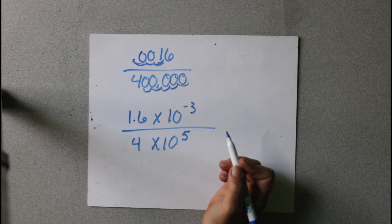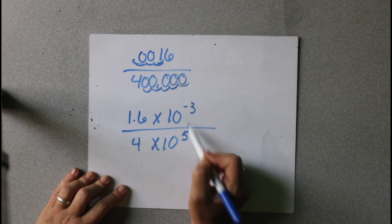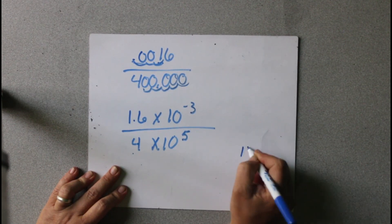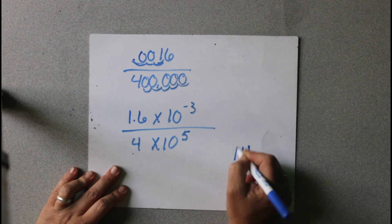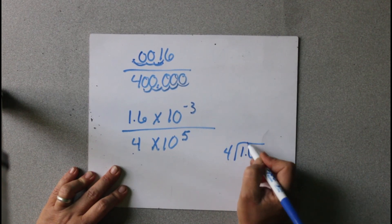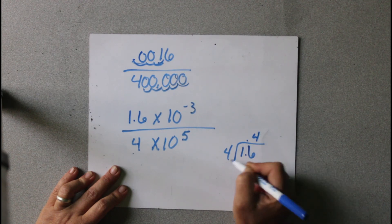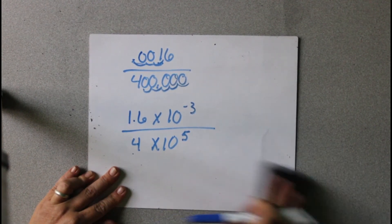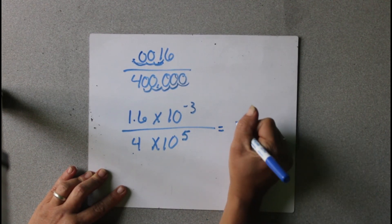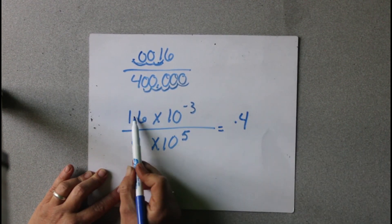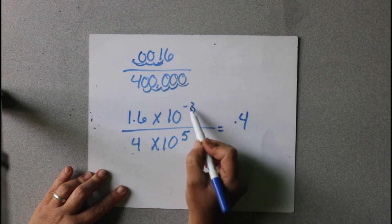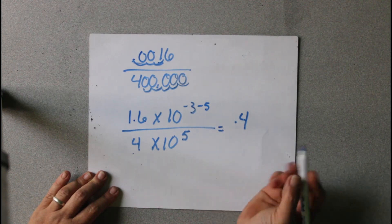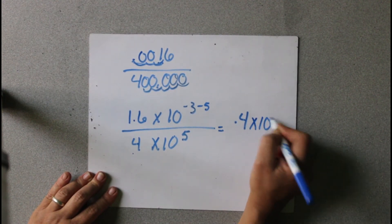Remember, when we divide exponents, we subtract. So first we're going to do 1.6 divided by 4. Bring that decimal up — 4 times 4 is 16, so it's going to be 0.4. So that first part is 0.4. Now we're going to subtract the exponents: negative 3 minus 5 will be negative 8.